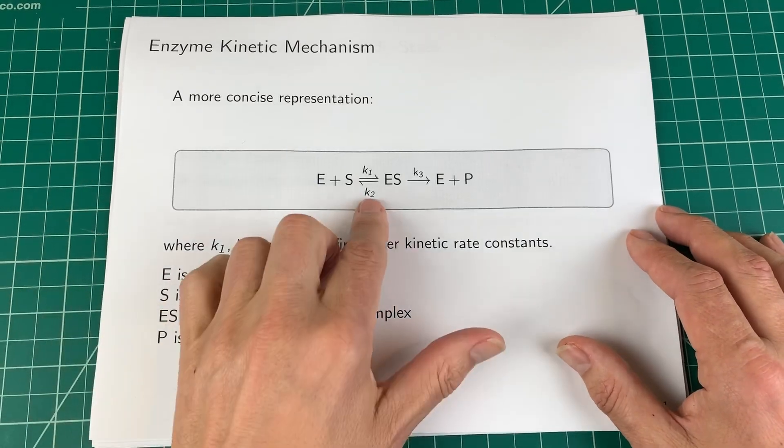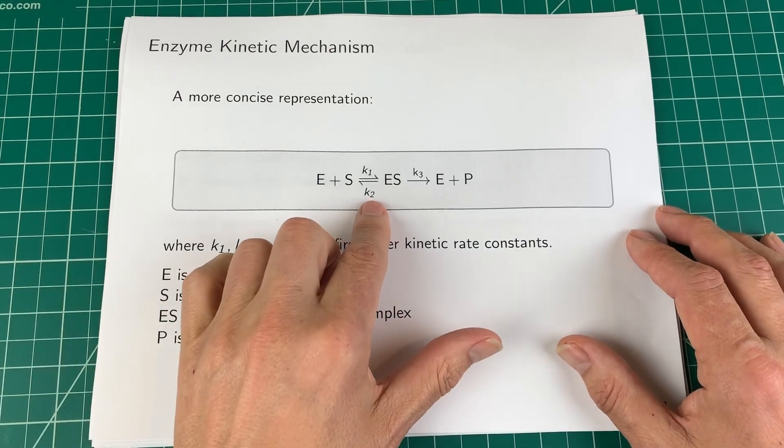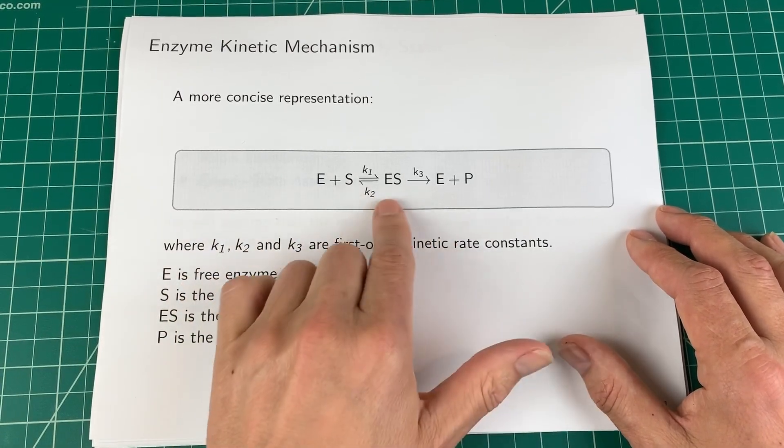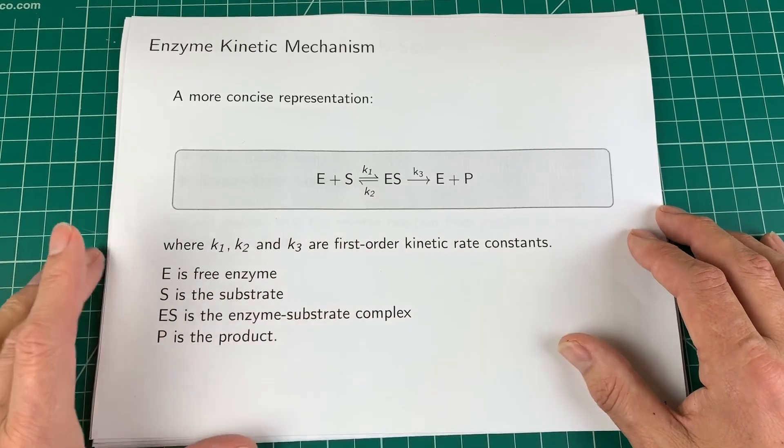So if you see K-1 in the books, don't be worried — I've just changed the notation slightly.